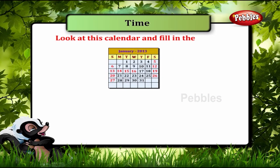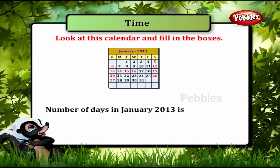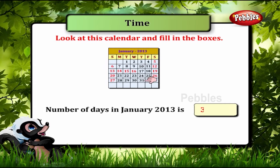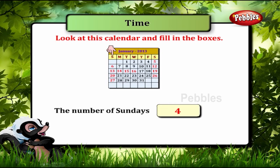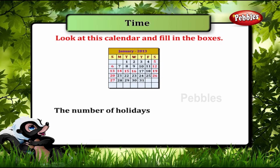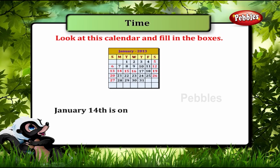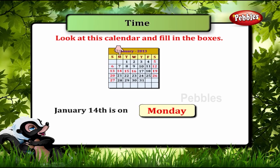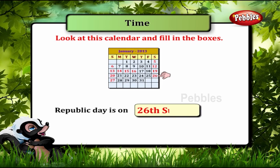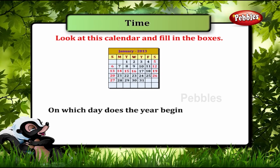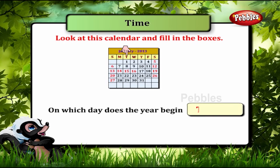Calendar — fill in the boxes. Number of days in January 2013 is 31. The number of Sundays: 4. The number of holidays: 8. January 14th is a Monday. Republic Day is on the 26th, a Sunday. On which day does the year begin? On Tuesday.